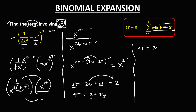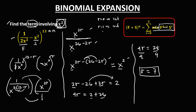Solving: 4r equals 2 plus 26, which is 28, so dividing by 4 gives r equals 7. Since r equals 0 is the first term and r equals 1 is the second term, r equals 7 corresponds to the 8th term. Therefore, the term with x to the power 2 is the 8th term.